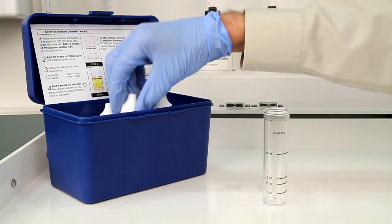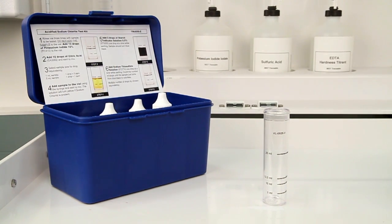Next, add 10 drops of citric acid. Hold the bottle vertically to get a consistent drop size.